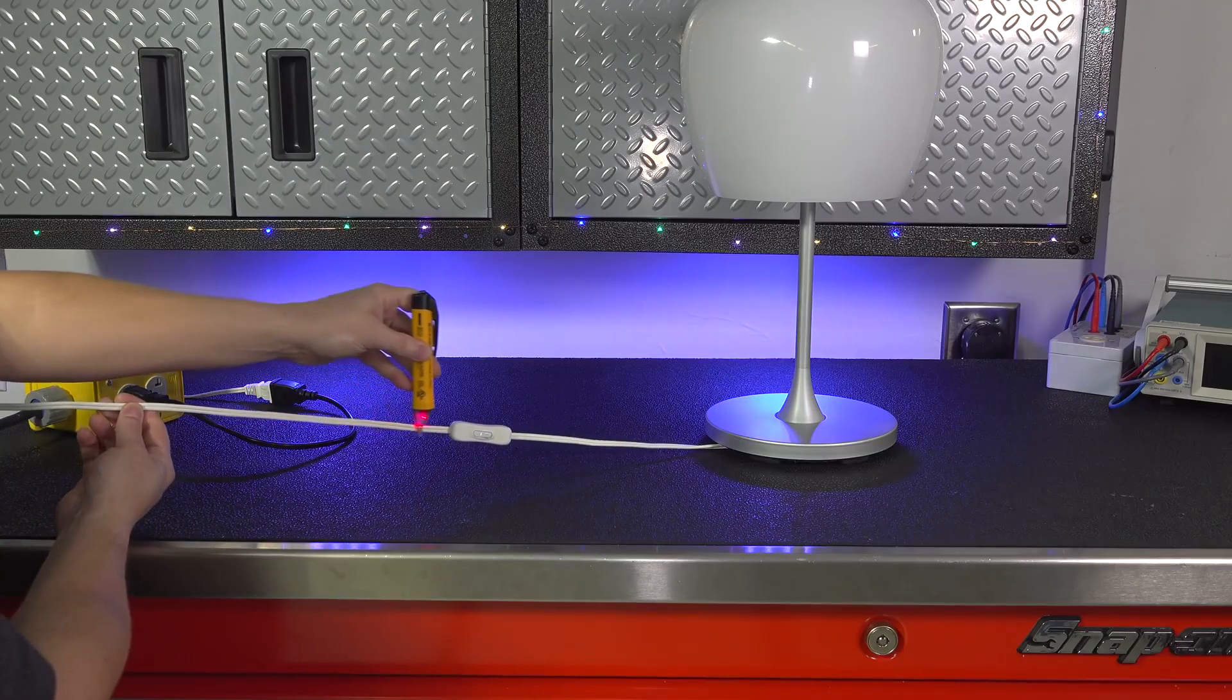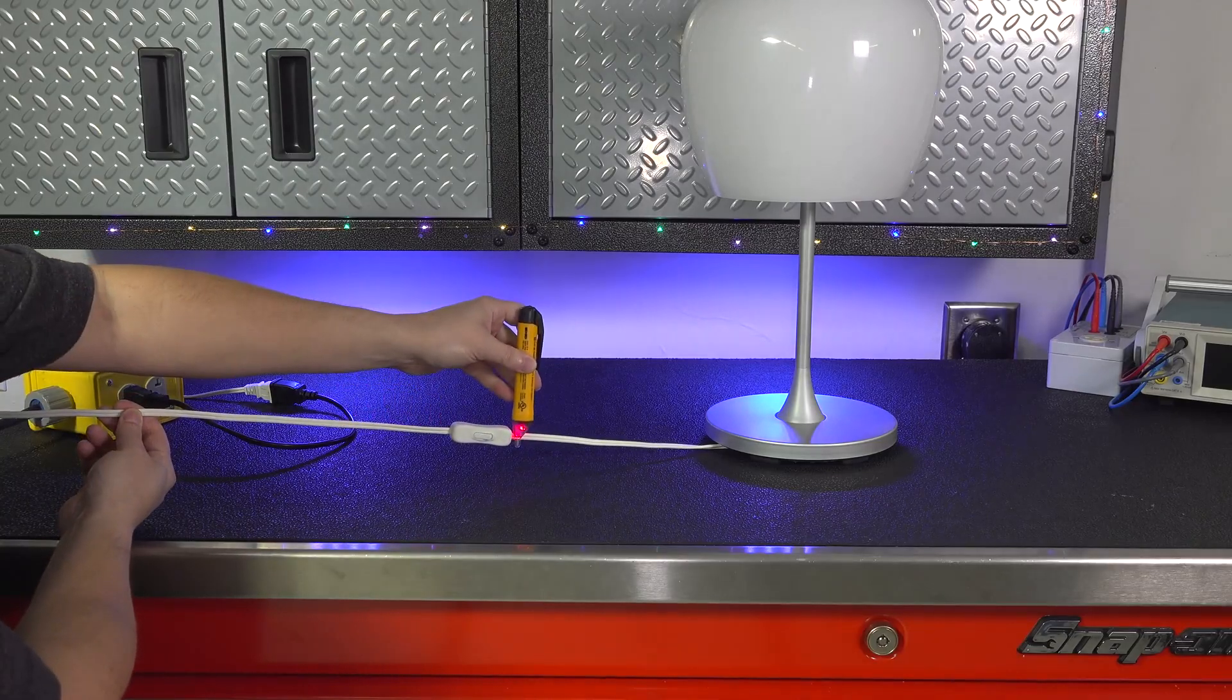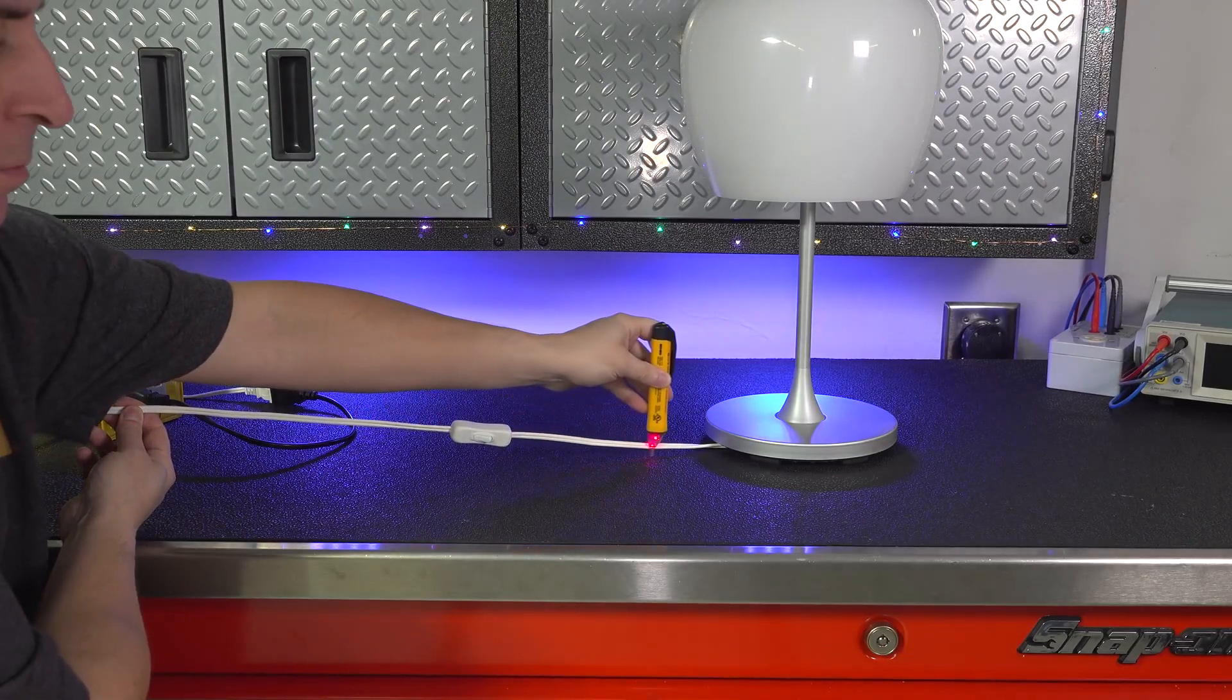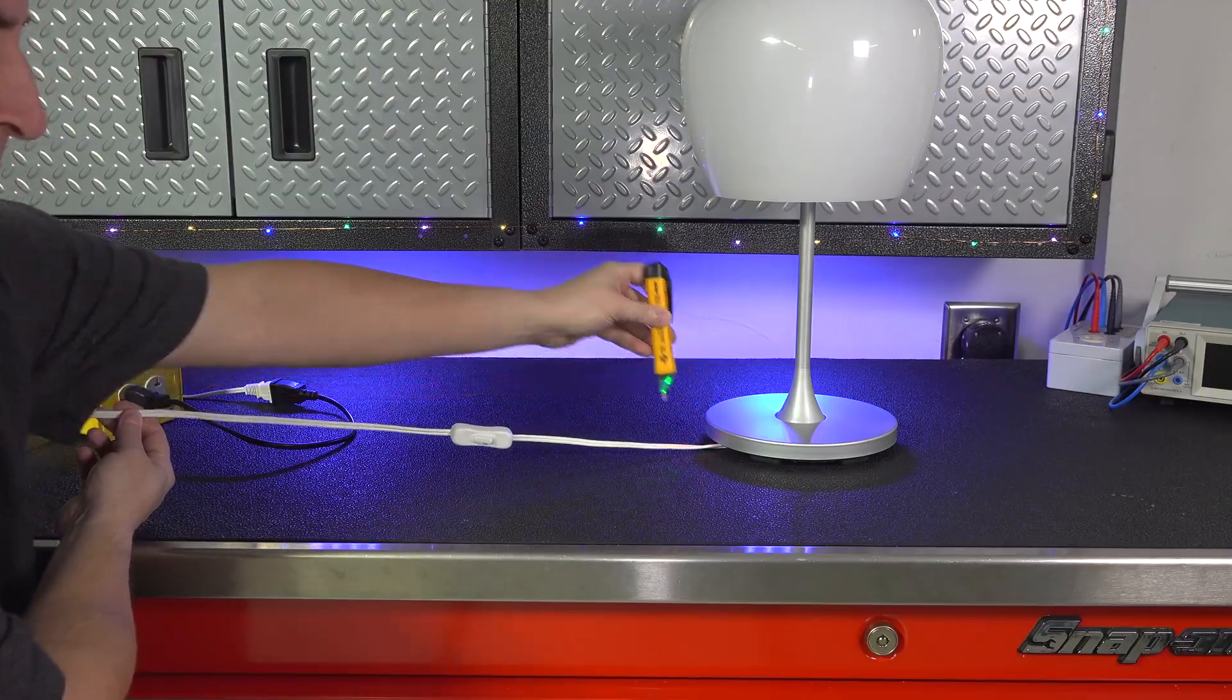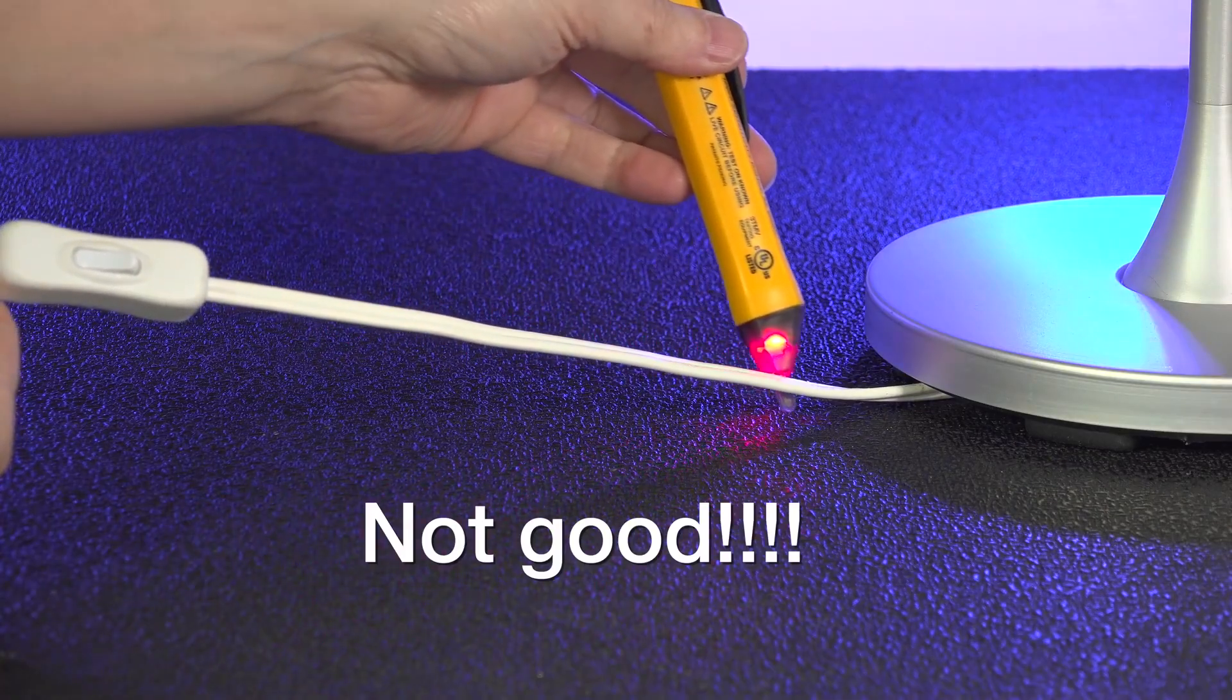And now when I repeat the test, take a look. I've got power before the switch, but now I've also got power after the switch all the way to the lamp. But how is that possible? Because the switch is actually off.